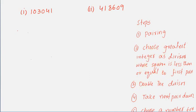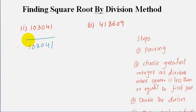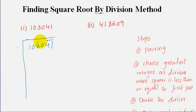Our first number is 103041. Step one is pairing — remember, pairing always starts from the right. Our first pair would be 41, then 30, and then 10.